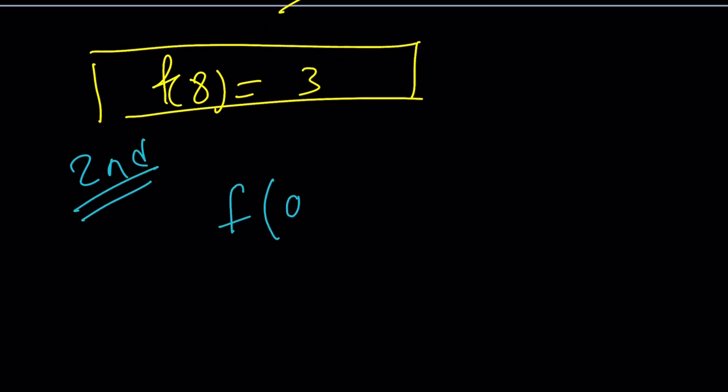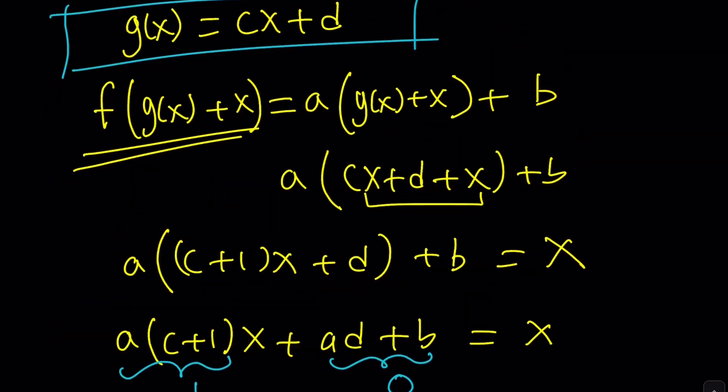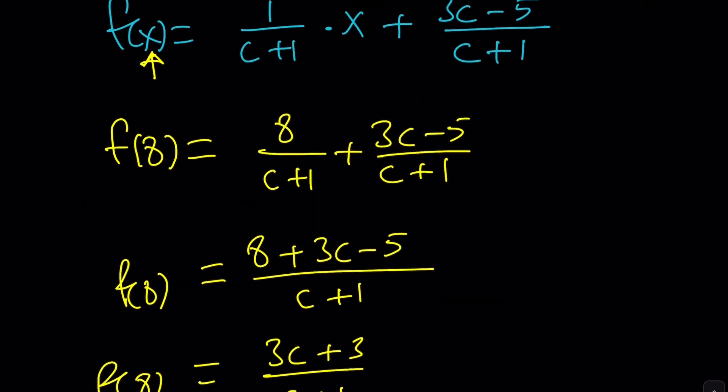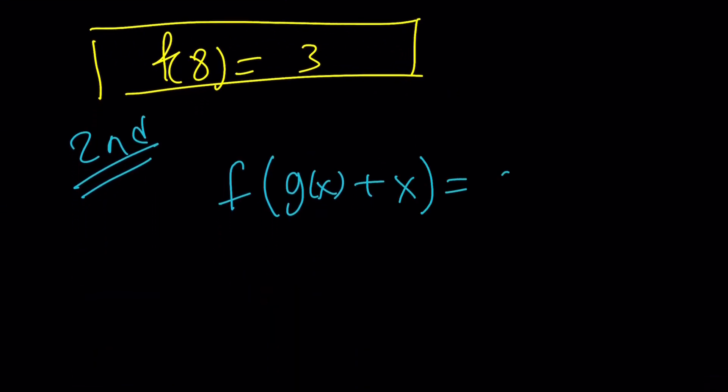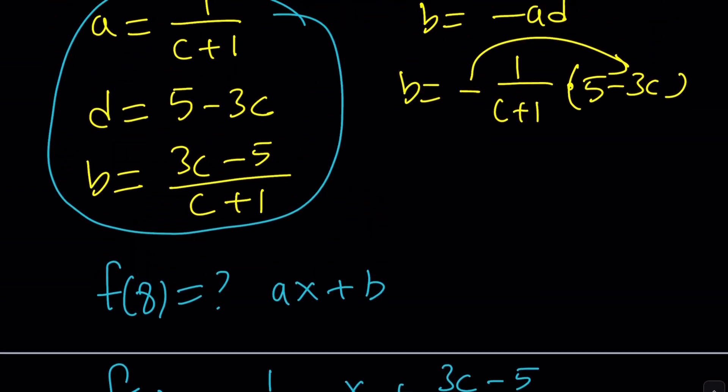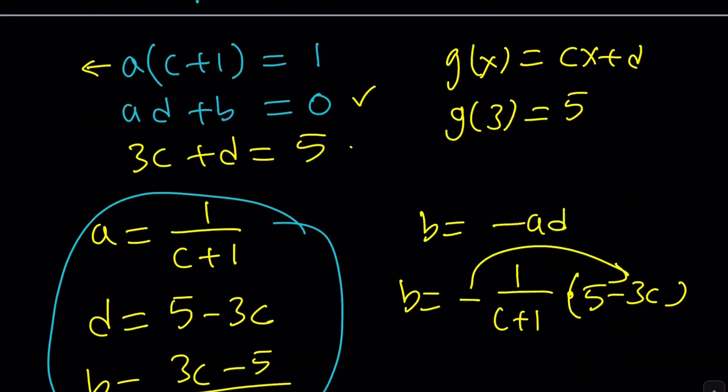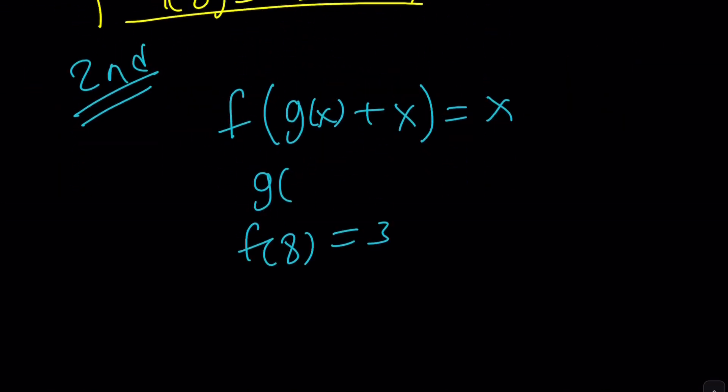So we have f(g(x) + x) = x. And we're supposed to find f(8). But we also know that g(3) = 5. Great. So g(3) = 5. And we're supposed to find f(8). Great. How do you do it?